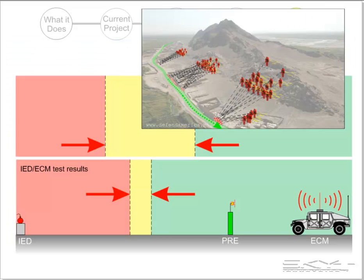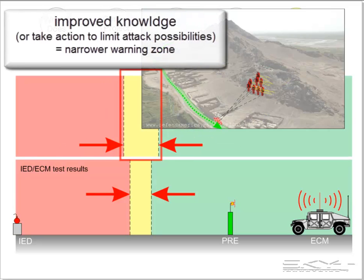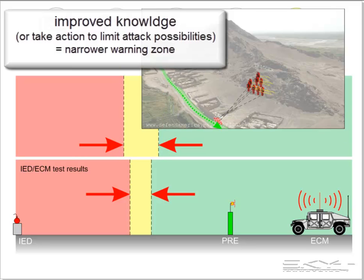Back to our test results: the observed ECM effectiveness transition in a single experiment will be narrower than the PRE device's indicated warning zone. If knowledge of the attack scenario can be improved, the indicated warning zone becomes smaller.